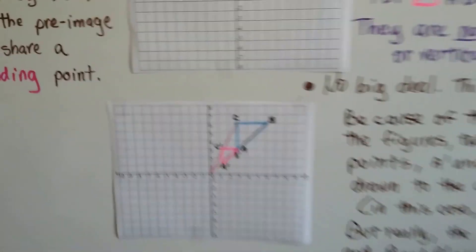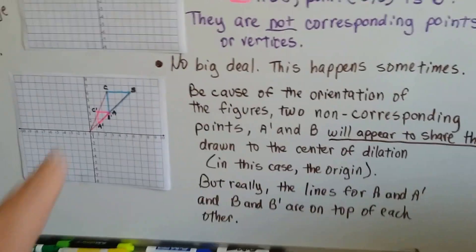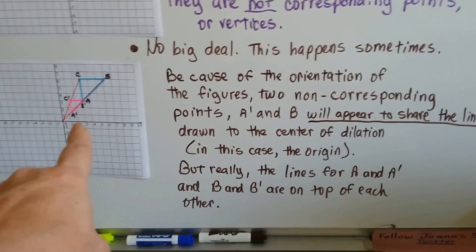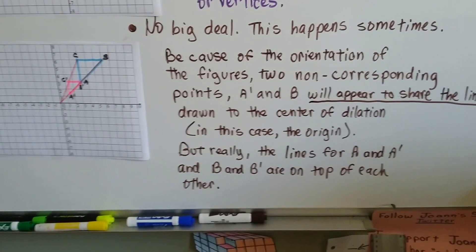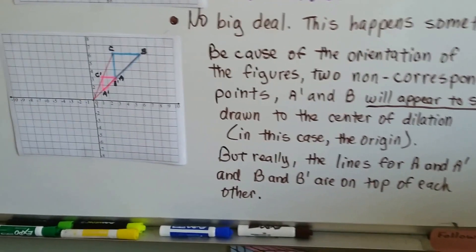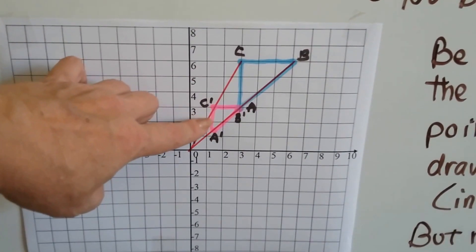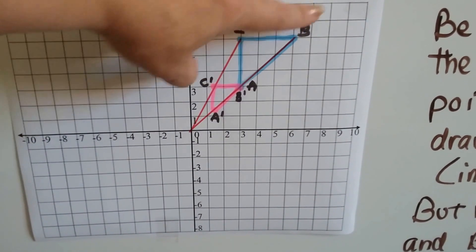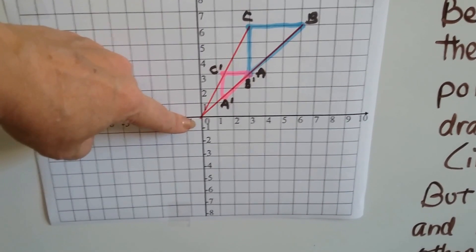What's happening is because of the orientation of the figures, A' and B appear to be sharing that drawn line to the center of dilation, in this case the origin. But really what's happening is the lines for A and A' and B and B' are on top of each other.